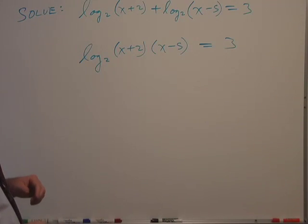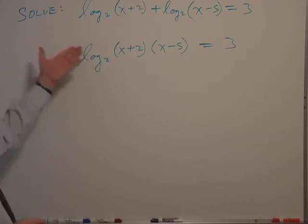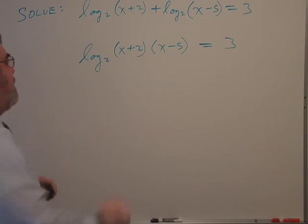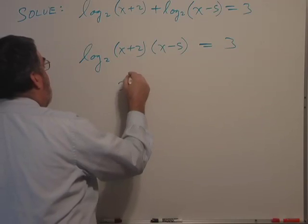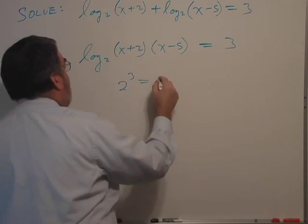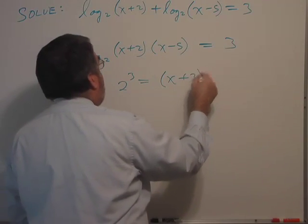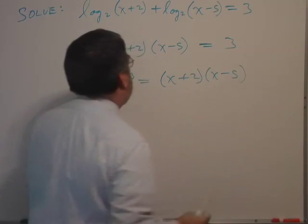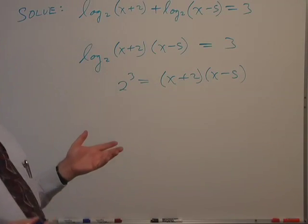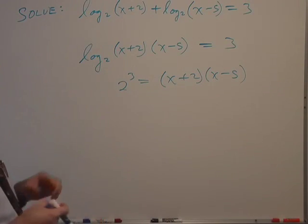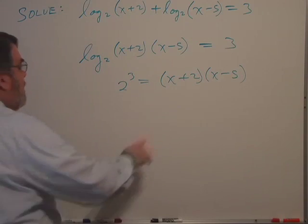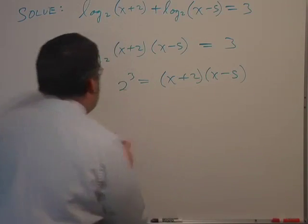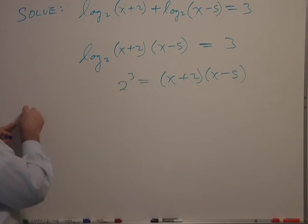So that now allows us to easily get rid of the logarithm by converting to exponential form. 2 to the third power is equal to this polynomial (x+2)(x-5). So what we end up with is a quadratic equation. I'm going to multiply this side and put it on the left, so it gives me x squared.